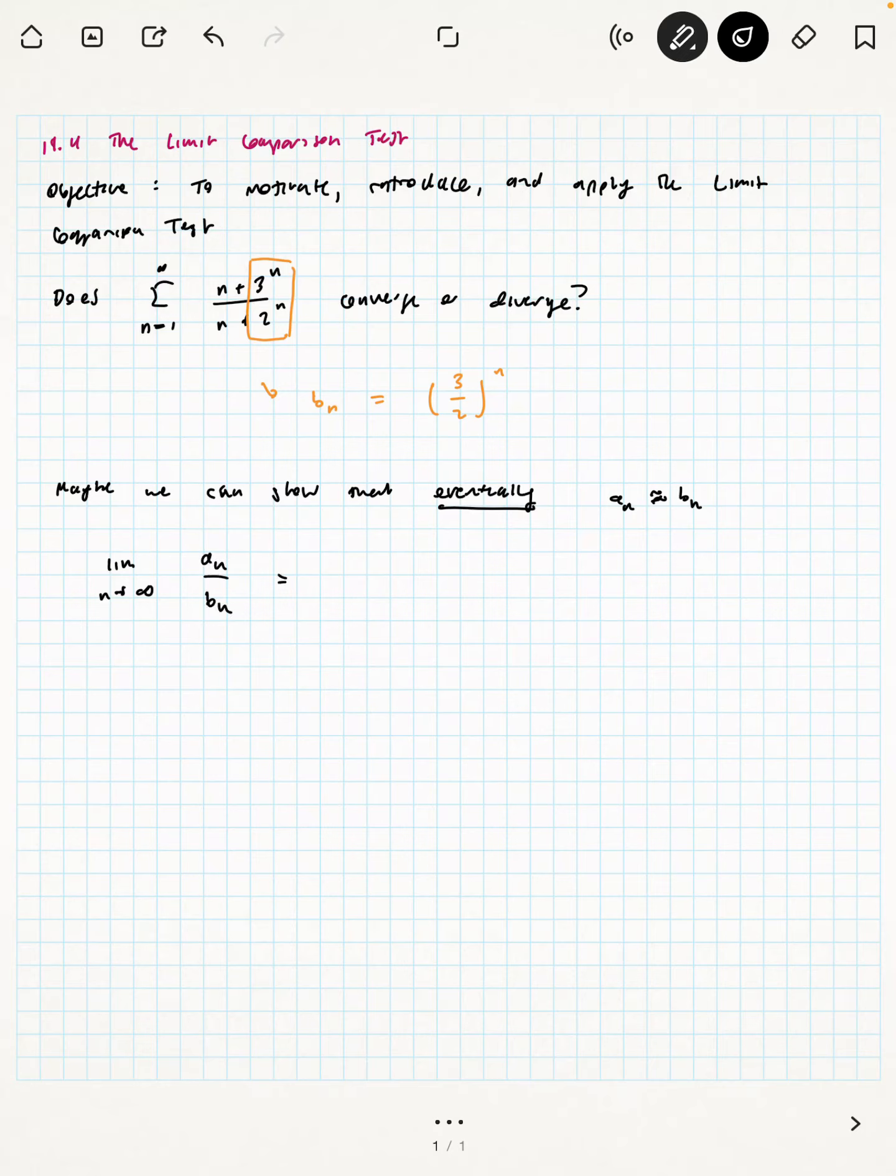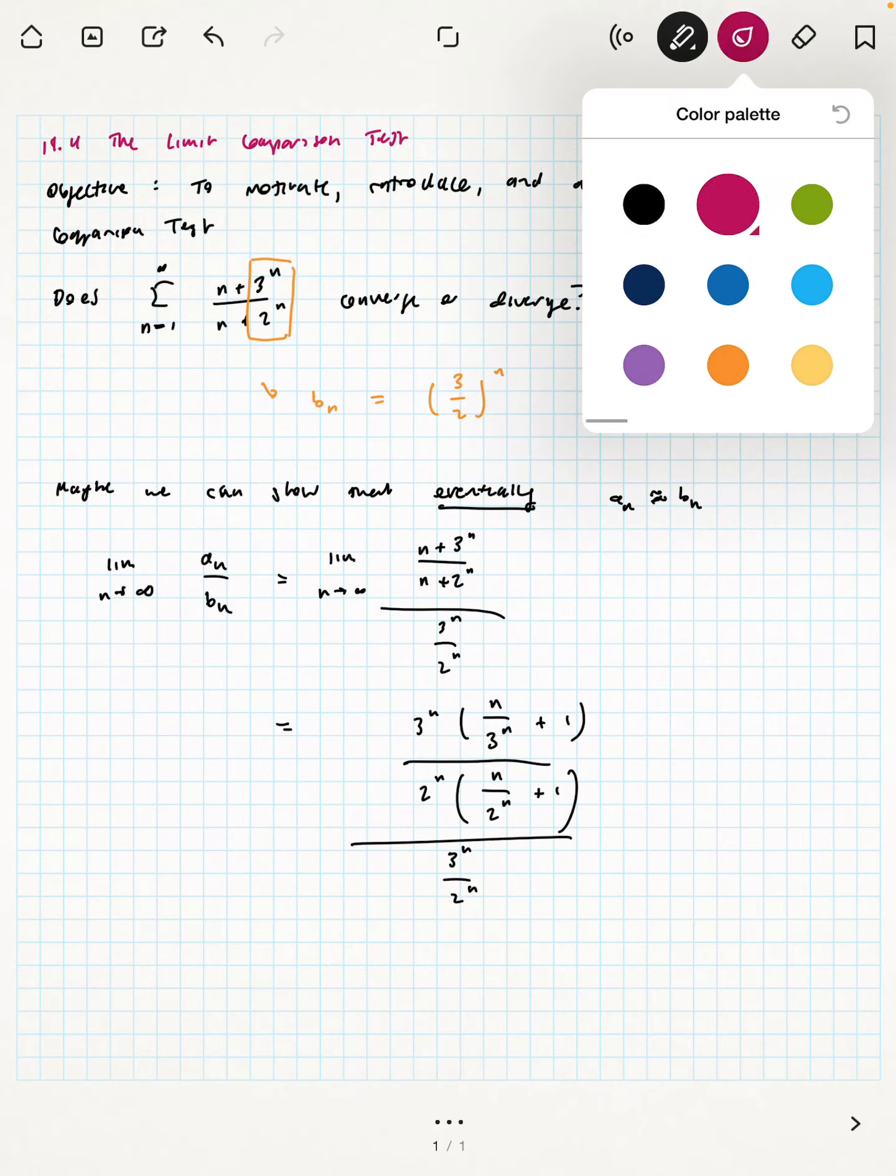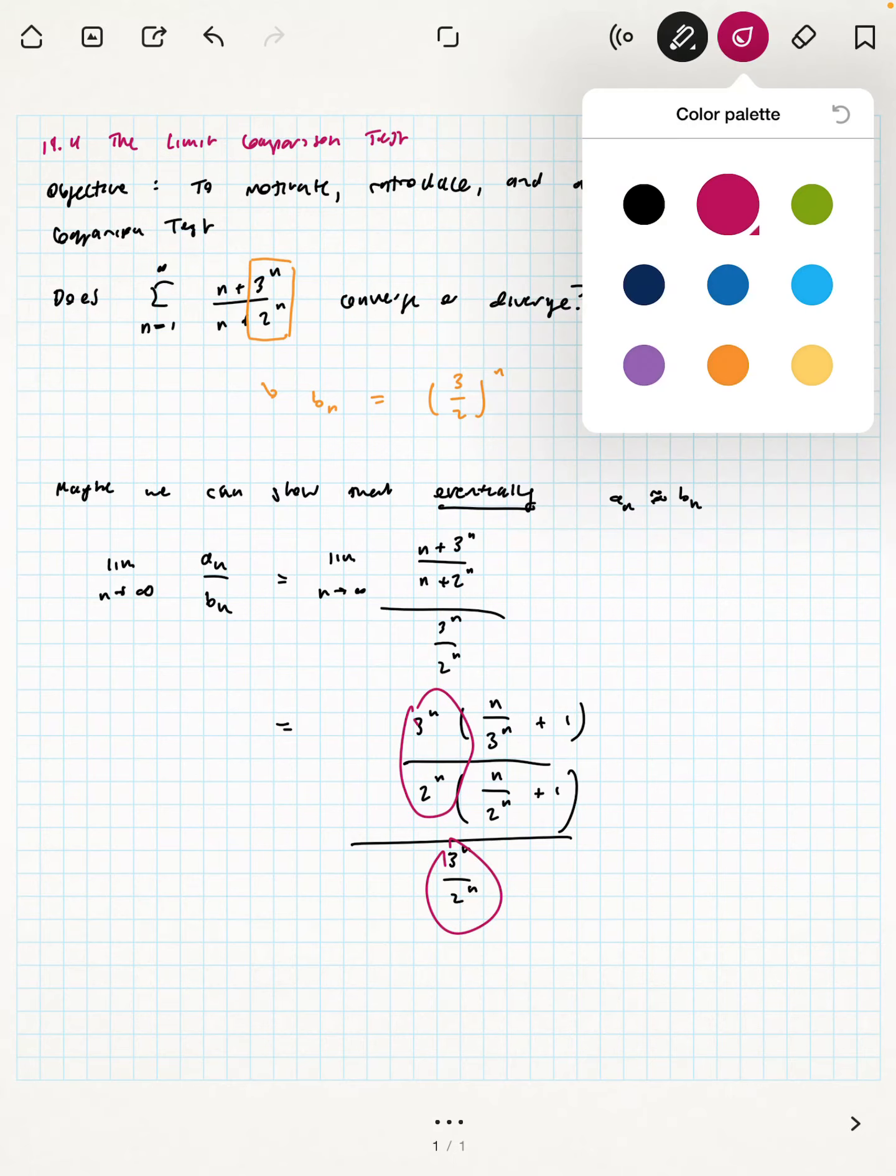So here's how we can show that. In the limit, as n goes to infinity, of a sub n over b sub n is going to be taking a comparison of the limits of the terms, and we hope that we can use our tools from working with sequences to bear this out. So I'm going to pull out 3 to the n from the numerator of the top fraction. That's going to give us n over 3 to the n plus 1, all over 2 to the n over n to the 2 to the n plus 1, all over 3 to the n over 2 to the n.